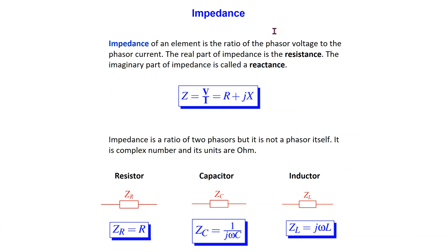In phasor circuit analysis, the concept of impedance plays a key role. The impedance of a circuit element is the ratio of the phasor voltage to the phasor current. Impedance is a complex number having units of ohm. Its real part is called resistance and imaginary part is called reactance. The important conceptual point to remember is that impedance is a ratio of two phasor quantities, but it is not a phasor itself.